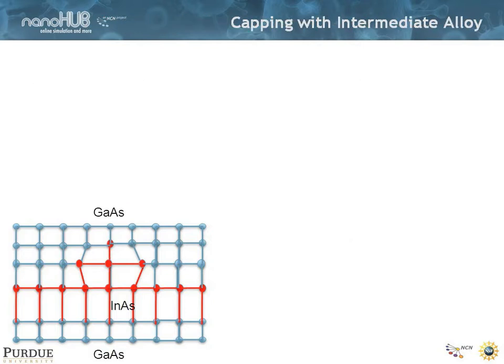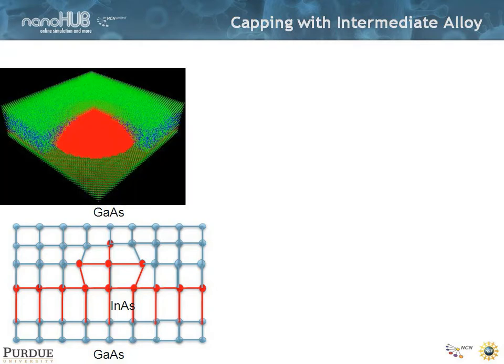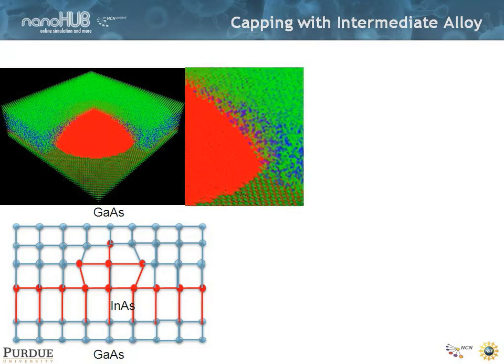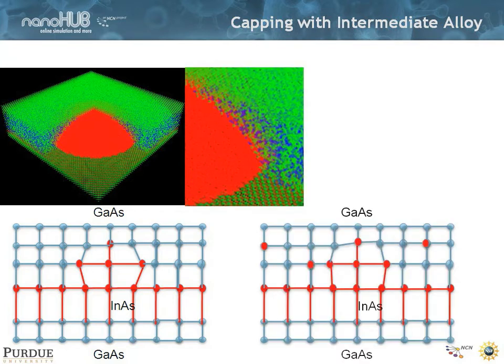So what happens now if you throw in a couple of more indium atoms into this capping layer? Here's a plot of more of a realistic geometry. So you have this alloy capping layer and it's a random alloy, so it's disordered.